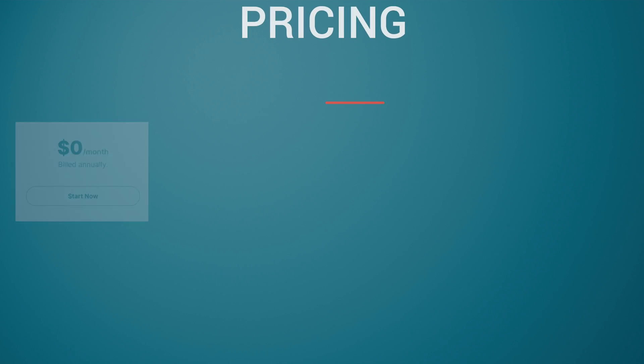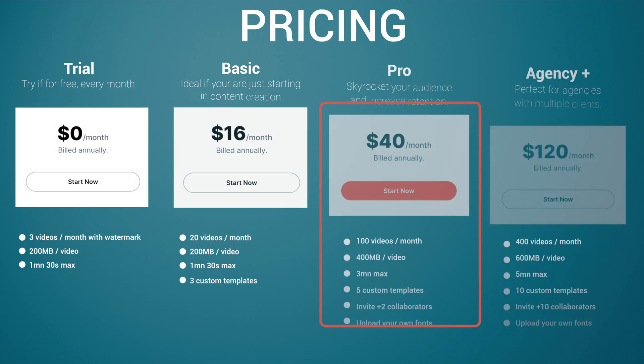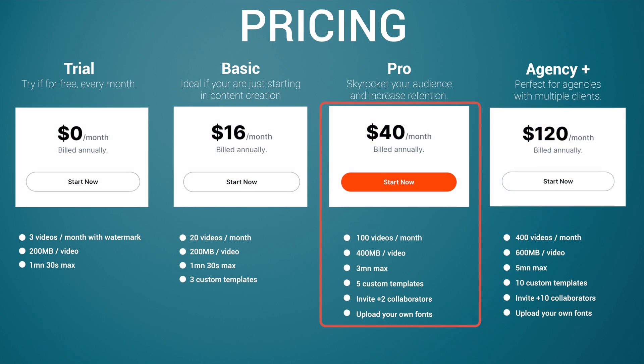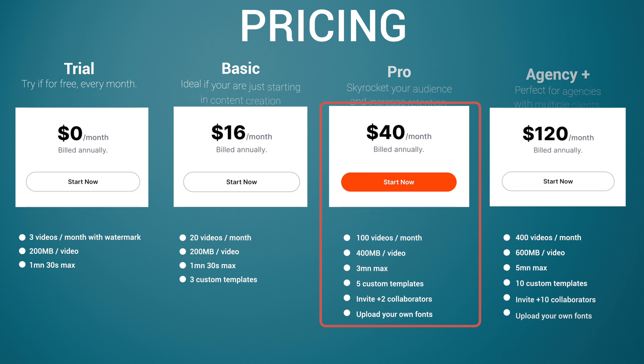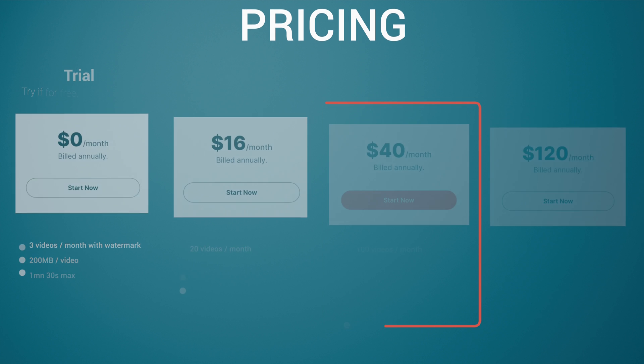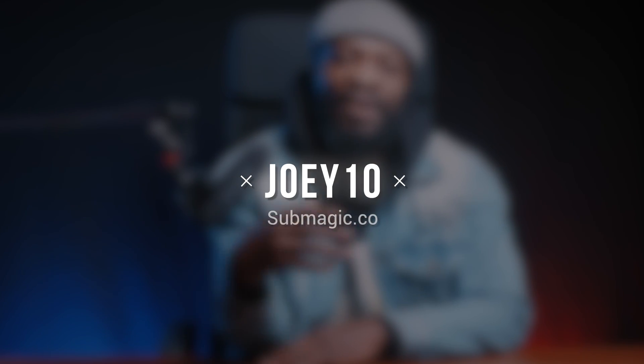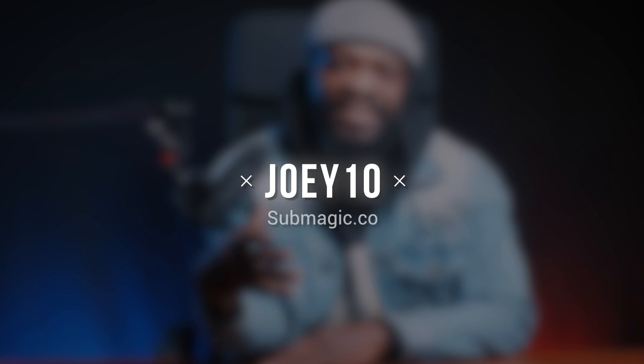Now for pricing: it starts with a trial version which is free but comes with a watermark. You can upgrade to Basic, Pro, or Agency level. I was able to get you guys 10% off by using the code Joey10 at no additional cost — and through that you'll also be supporting this channel. Catch you guys on the next one. Peace.